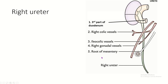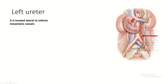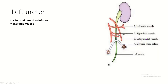From above downward, the following structures cross in front of the right ureter: first the third part of the duodenum, then the right colic vessels, then the ileocolic vessels, the right gonadal vessels, and the root of the mesentery. The left ureter is situated just lateral to the inferior mesenteric artery.